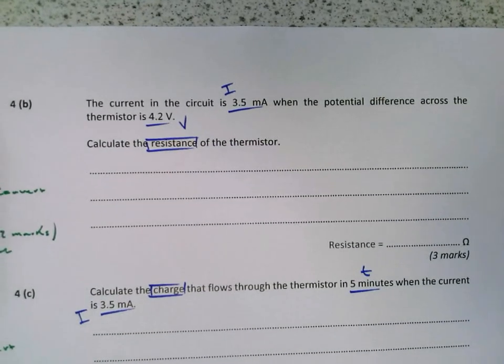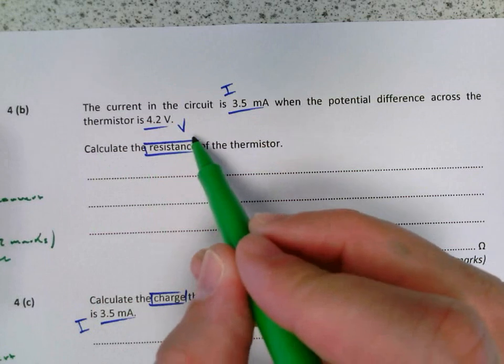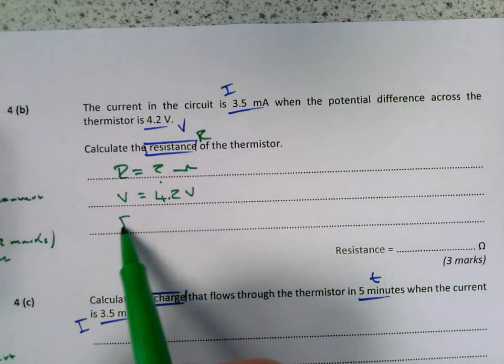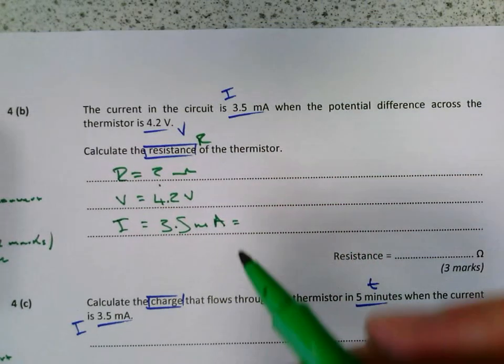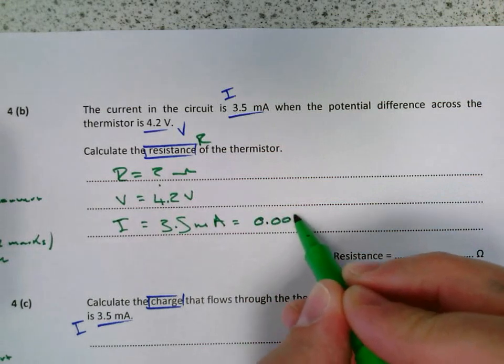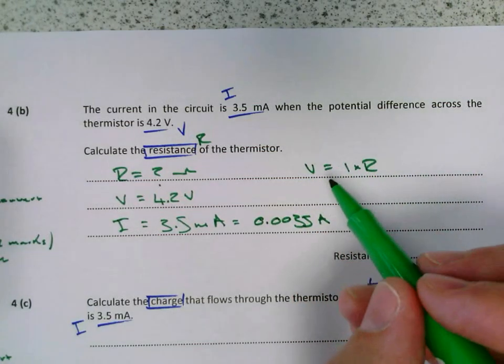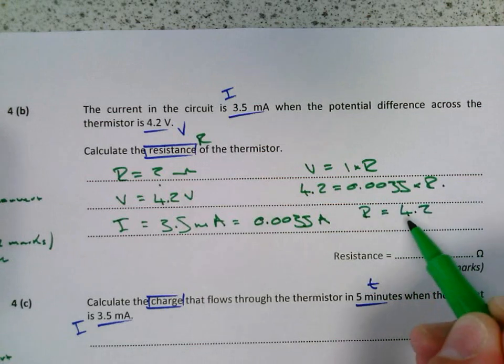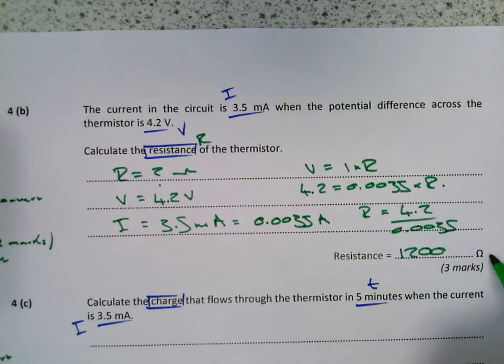You then need to use V equals IR here. It is important that you convert your unit. You want to know the resistance. We know the potential difference is 4.2 volts. The current is given in milliamps, so you need to convert this by dividing by 1,000. Dividing this by 1,000 gives you 0.0035 amps. Put that into the equation V equals IR, and say that 4.2 equals 0.0035 times R. So R equals 4.2 divided by 0.0035. That gives you 1,200 ohms. If you've got 1.2 ohms, you'd get two marks, but obviously that is incorrect.